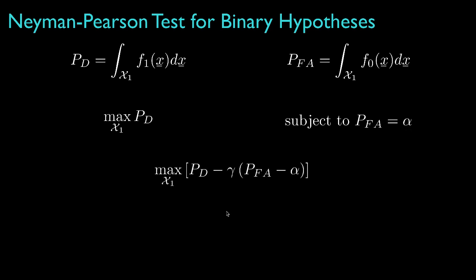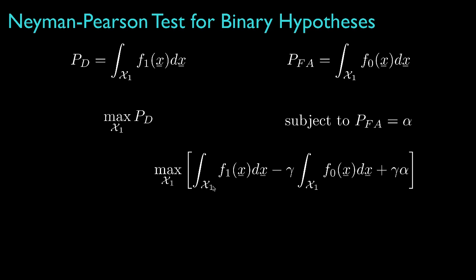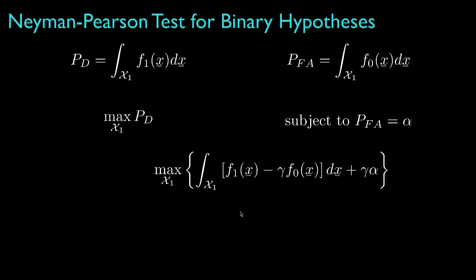To do this, we can use a straightforward application of Lagrange multipliers. That is, we augment the detection probability with a term that has the false alarm probability minus the specified value alpha, multiplied by a parameter gamma. When the false alarm probability equals alpha, this term will be zero and we'll be maximizing the detection probability as initially intended. This augmented objective function has two terms that depend on the classification region — the detection probability and the false alarm probability — which we could show through the integrals that define those probabilities. If we group terms in a common integral, we can use the same logic used when we derived Bayes' test.